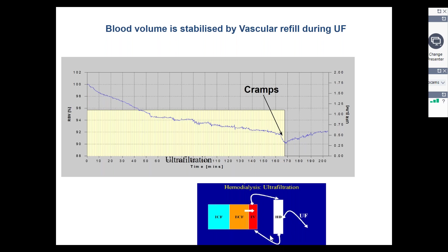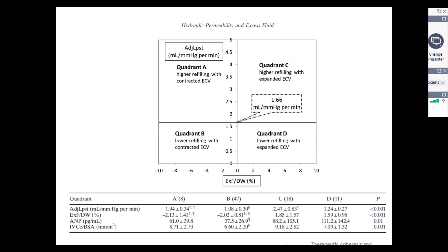A flat line of blood volume indicates adequate refilling, whereas a very steep, sharp, linear drop means refilling is inadequate. Further ultrafiltration can lead to compromise in the cardiovascular hemodynamic status of the patient, i.e., falling blood pressure. Considering hydraulic permeability of tissues, patients on dialysis can have a high refilling rate without an expanded extracellular compartment, or a low refilling rate with an expanded extracellular compartment. Quadrant B is typically diabetic patients where fluid may be very difficult to remove even if there is evidence of extracellular overload. Understanding the patient phenotype can help address strategies to remove fluid in order to achieve target weight.